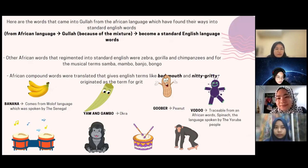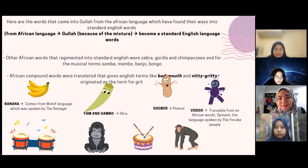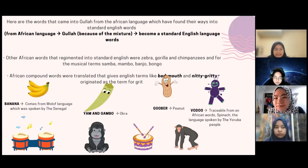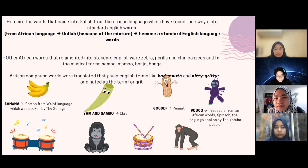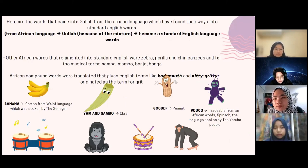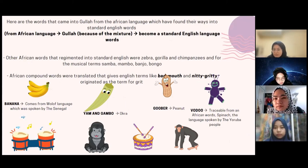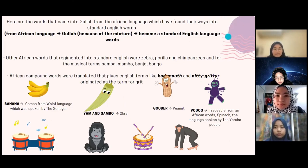Here are some words that came into Gullah from African language and found their way into standard English. For example, banana comes from the Wolof language, spoken by the Senegalese, and gumbo was traceable from an African word for spinach, the language spoken by the Yoruba people. Other African words that entered standard English include zebra, gorilla, and chimpanzee, and for musical terms, samba, mambo, bongo, and bonго. African compound words translated into English terms like big mouth and nitty-gritty, which originated as terms in Gullah.